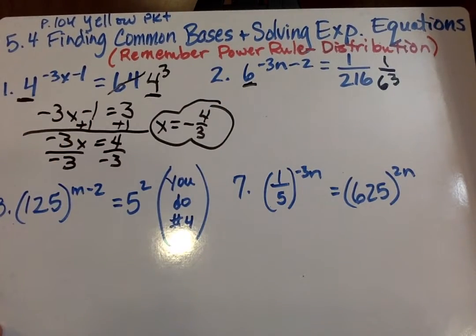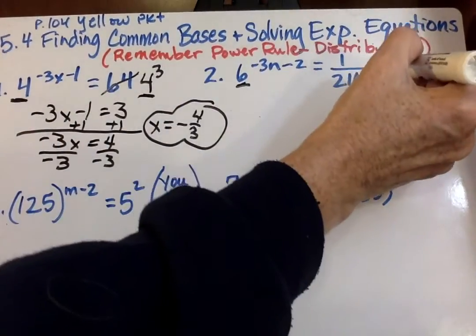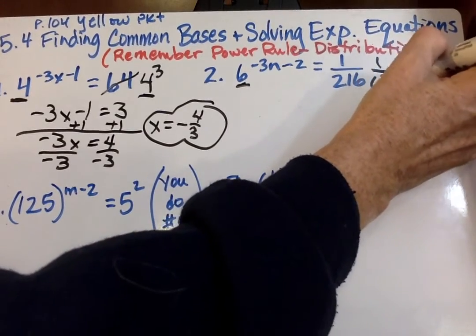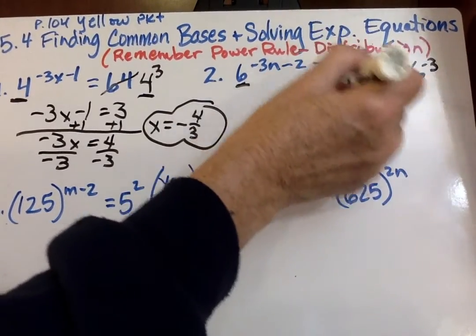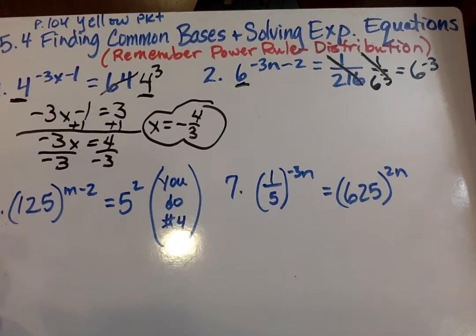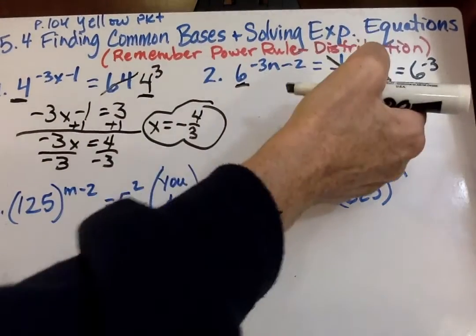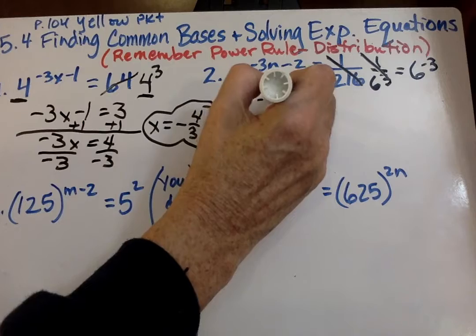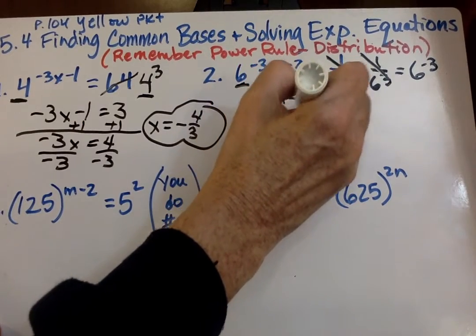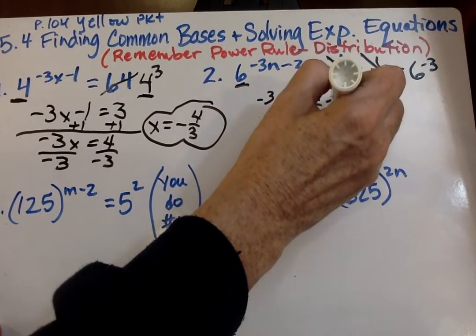This 6 is also on the top. So when we move it upstairs, 6 to the negative 3. And I'm going to kind of cross those parts out there. So now that our bases are the same,